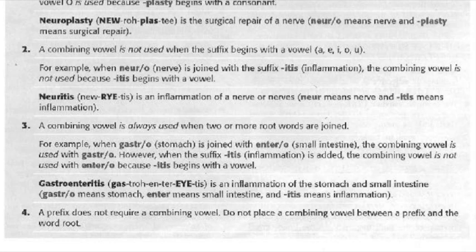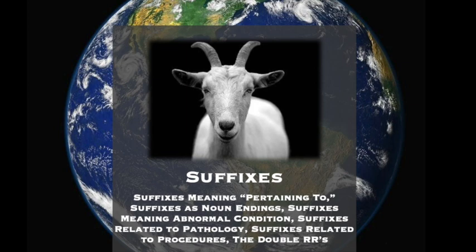Rule four: a prefix does not require a combining vowel — you just place it at the beginning of the word to complete the term. A suffix is added to a word root after a combining vowel, or directly after the word root if no combining vowel is needed. A suffix can tell you whether something is a procedure, a condition the person is suffering from, or a type of disorder or disease.